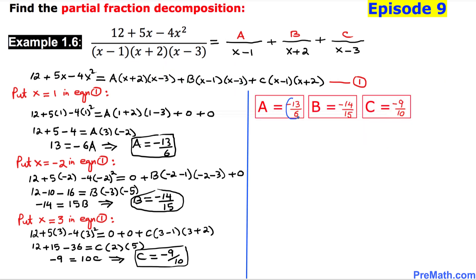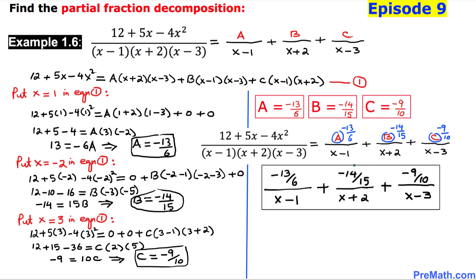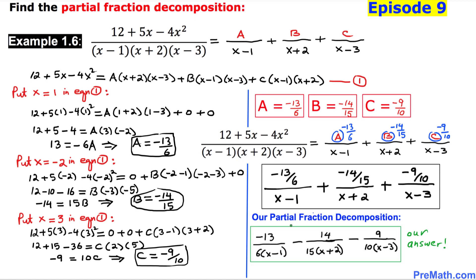So our values are: A equals negative 13 over 6, B equals negative 14 over 15, and C equals negative 9 over 10. In our partial fraction decomposition, we replace A, B, and C with these fractions, and that gives us our final answer. Thanks for watching and please don't forget to subscribe to my channel for more exciting videos.